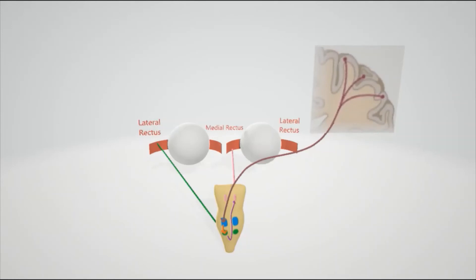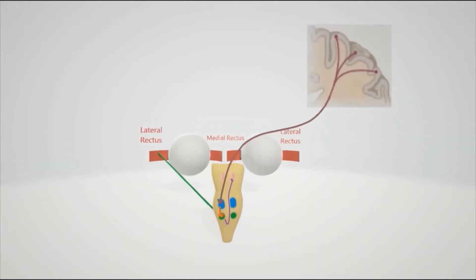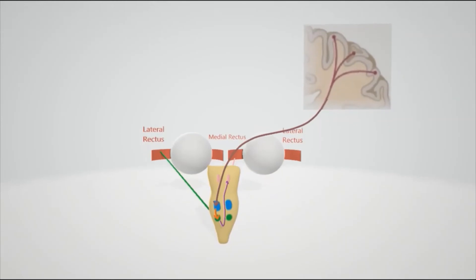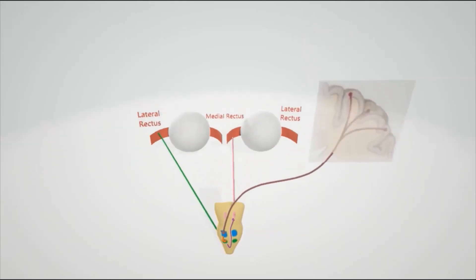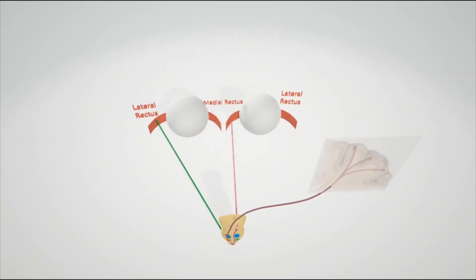Another association is that in internuclear ophthalmoplegia, the lateral rectus, when it looks to the left and the medial rectus is left alone, there's going to be nystagmus. Because since only the left eye is going to be moving to the left, it's going to sort of be confused. Because the right eye is not moving, so it's like, do I continue looking to the left or do I go back? And that leads to nystagmus.